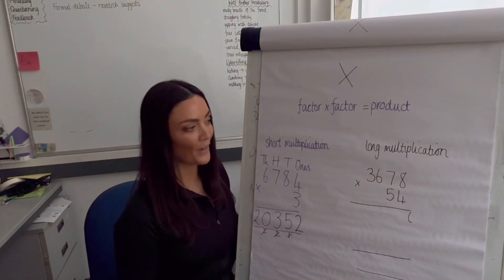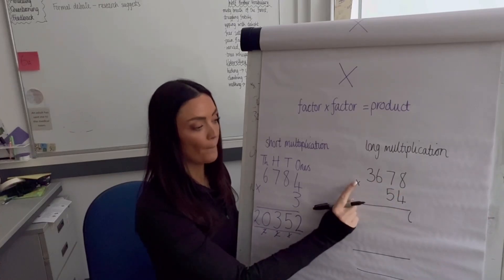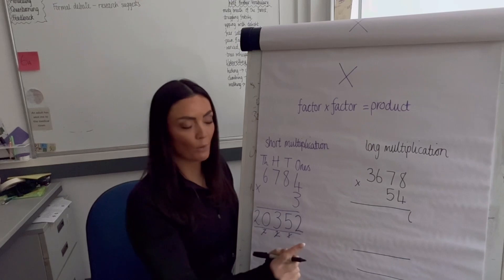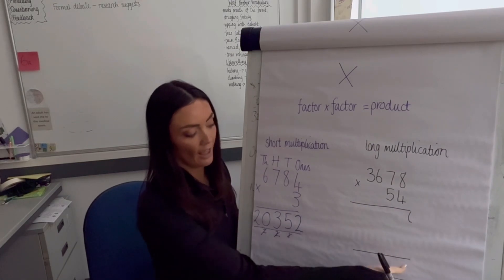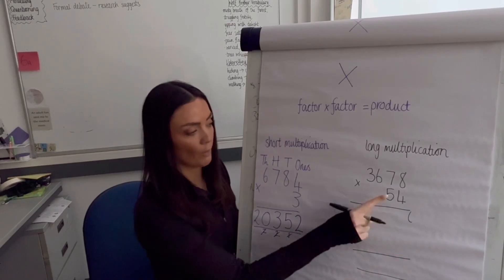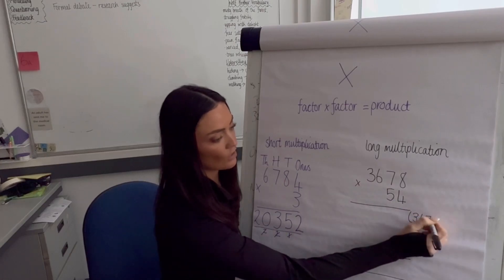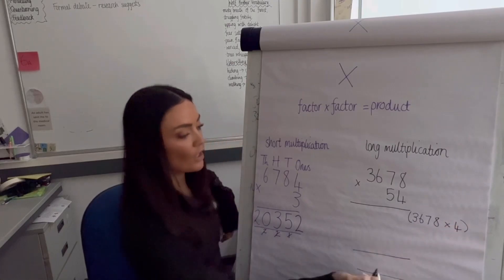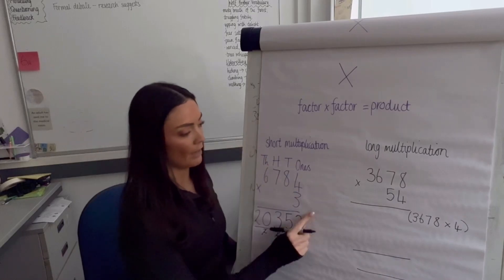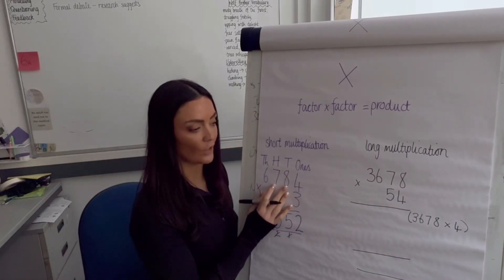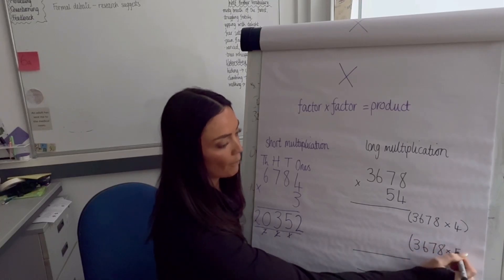Now we're going to do long multiplication: 3678 multiplied by 54. It's really important when setting this up to leave two lines for multiplying and one for the product. We can pretend the 50 isn't there for the first step — 3678 multiplied by 4 — exactly like short multiplication. Then we'll do 3678 multiplied by 50.